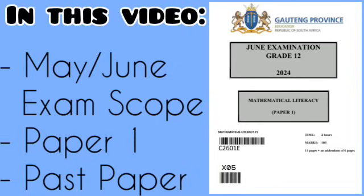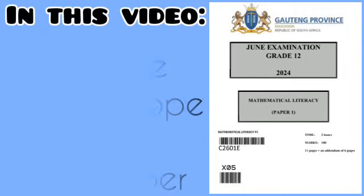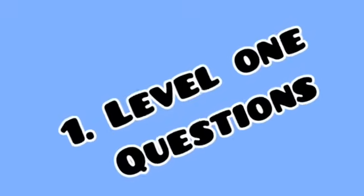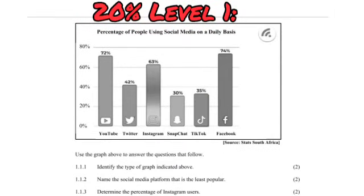We are going to use that same question paper so you can see examples of what to expect. We will also have another video with a different question paper, and we are going to do as many question papers as we can before the examination period starts. The first topic on your scope is Level 1 questions — these are basic maths questions, mostly found in Question 1, and worth about 20% of your question paper.